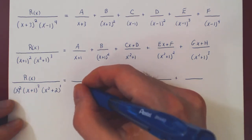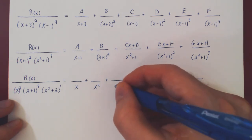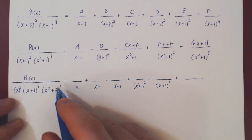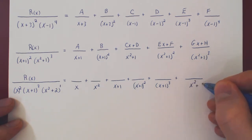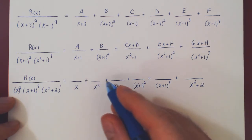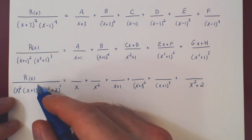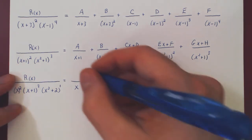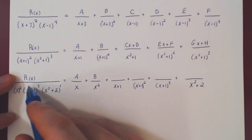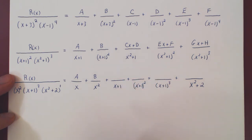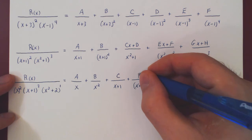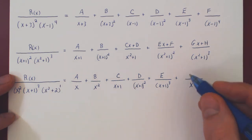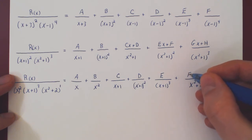So the x squared will go from over x to over x squared. The x plus 1 cubed goes from over x plus 1, to over x plus 1 squared, to over x plus 1 cubed. And x squared plus 2, having an exponent of 1, gives a single partial fraction with denominator x squared plus 2. For the numerators: x is a linear polynomial, so each numerator must be a constant. Same for x plus 1 — it is a linear factor, so each of its three partial fractions has a constant numerator. And x squared plus 2 is an irreducible quadratic, so its numerator must be a linear polynomial — some multiple of x plus a constant.